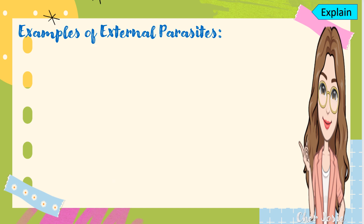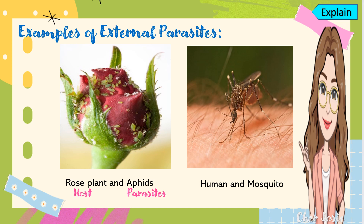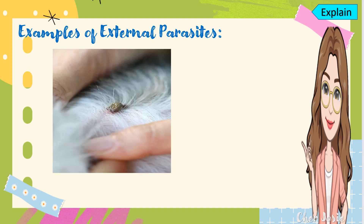Next, we have examples of external parasites, which are found outside the body of the host. For example, we have the rose plant and aphids: the rose plant is the host and the aphids are the parasites. Another example, we have the human body and the mosquito: the host is the human and the parasite is the mosquito, wherein the mosquito draws blood from the human. Another example, we have the dog and the tick: the dog is the host and the tick is the parasite.